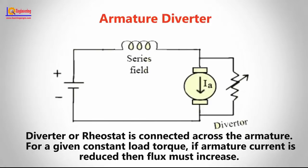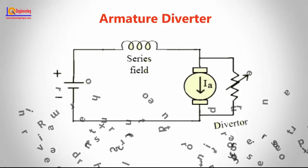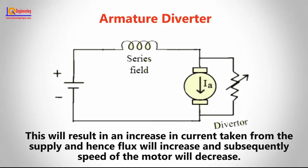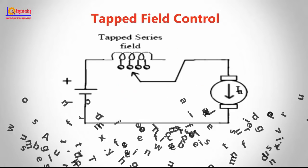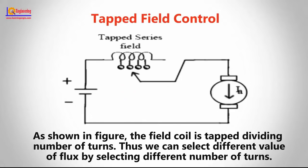By decreasing the field current, flux can be decreased to the desired amount and speed can be increased. In the armature diverter method, a diverter or rheostat is connected across the armature. For a given constant load torque, if armature current is reduced then flux must increase. This results in an increase in current taken from the supply, and hence flux will increase and subsequently the speed of the motor will decrease.